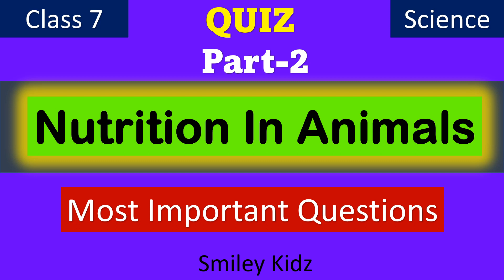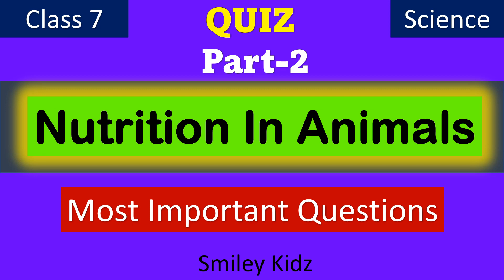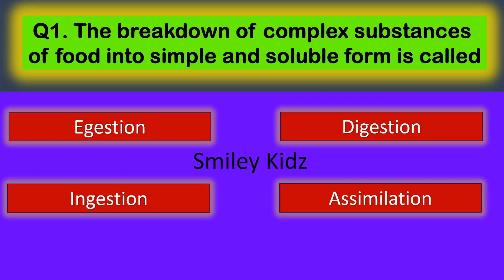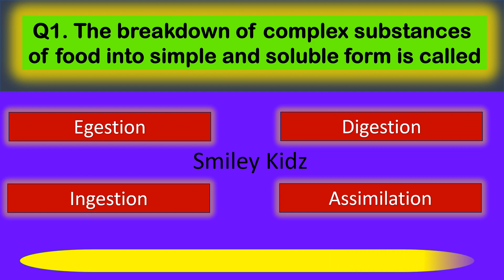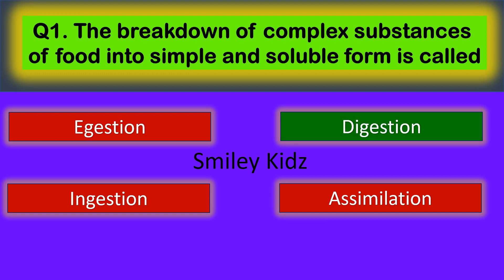Now let's get started with the quiz on Nutrition in Animals. Question number one: the breakdown of complex substances of food into simple and soluble form is called — your options are: aggression, digestion, ingestion, and assimilation. The correct answer is digestion. The breakdown of complex substances of food into simple and soluble form is called digestion.